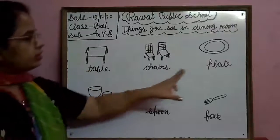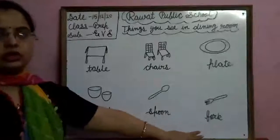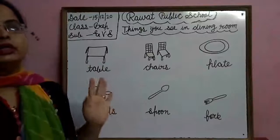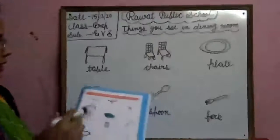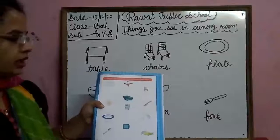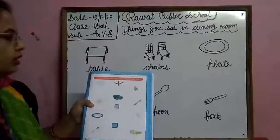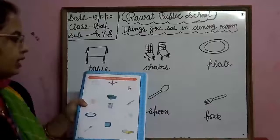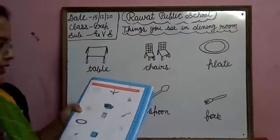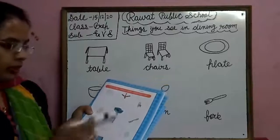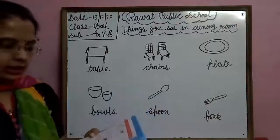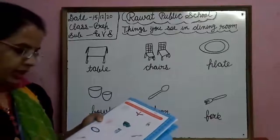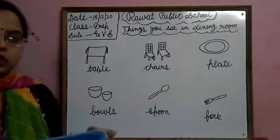Okay — table, chairs, plate, bowls, spoon, fork. These are things we can see in dining room. I will circle the things with which you eat — bowls, fork, plate, spoon. These are things we can use in dining room.